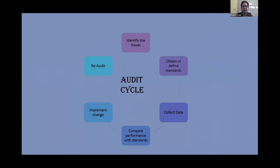What is an audit cycle? Various literatures give different processes, but simply put, an audit cycle is where you identify the issues, obtain or define standards, collect data, compare performance with standards, implement the change, and then re-audit.